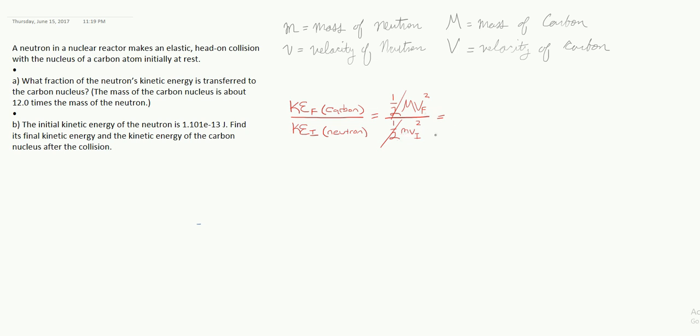the carbon mass over the neutron mass, is just 12. So I'm looking for 12 v final squared, capital V final, over lowercase v initial squared. Try and make it as clear as possible. This is where I need to get. Game plan is set. Let's see what we can get.